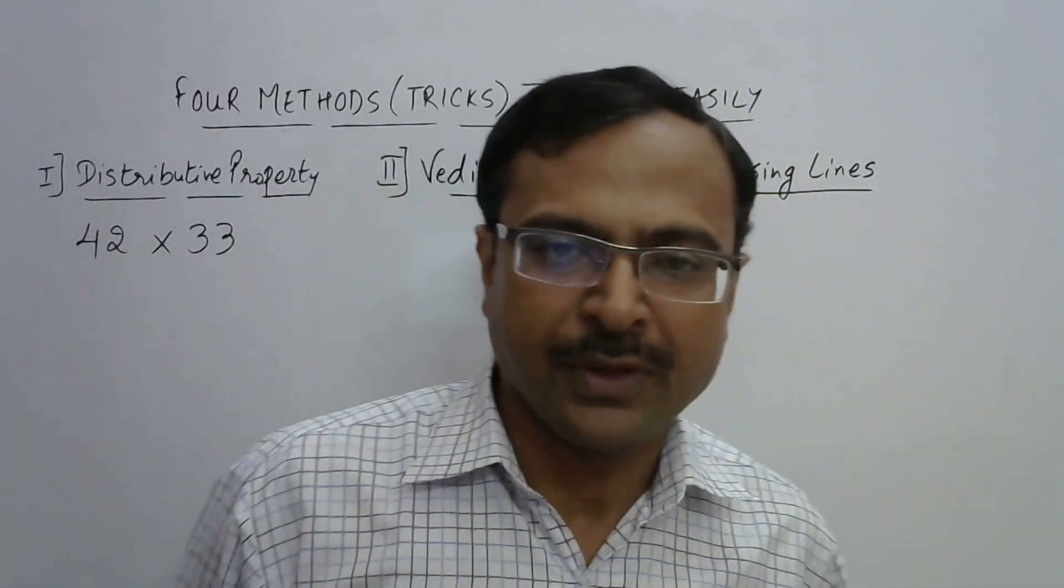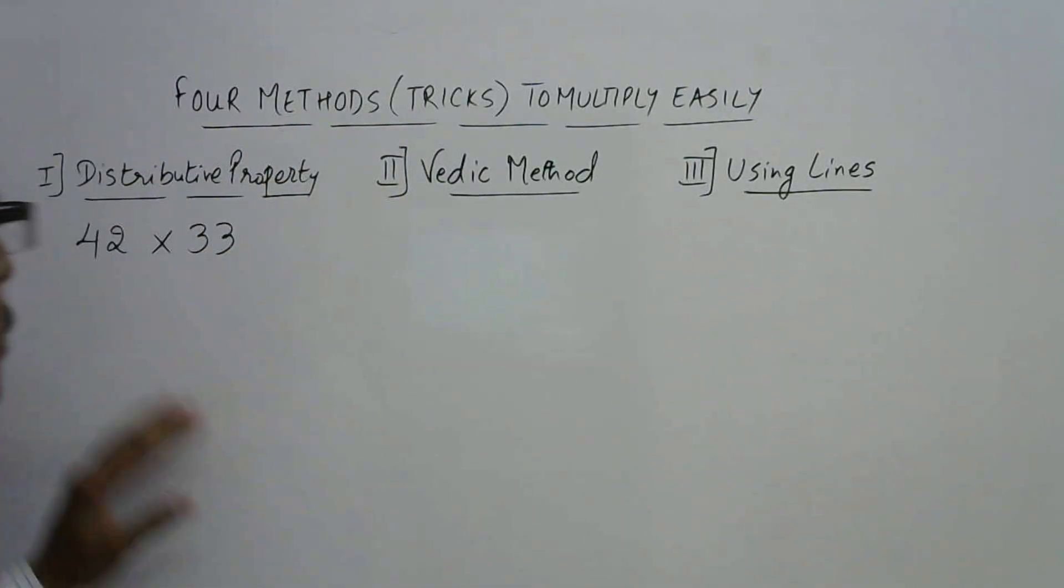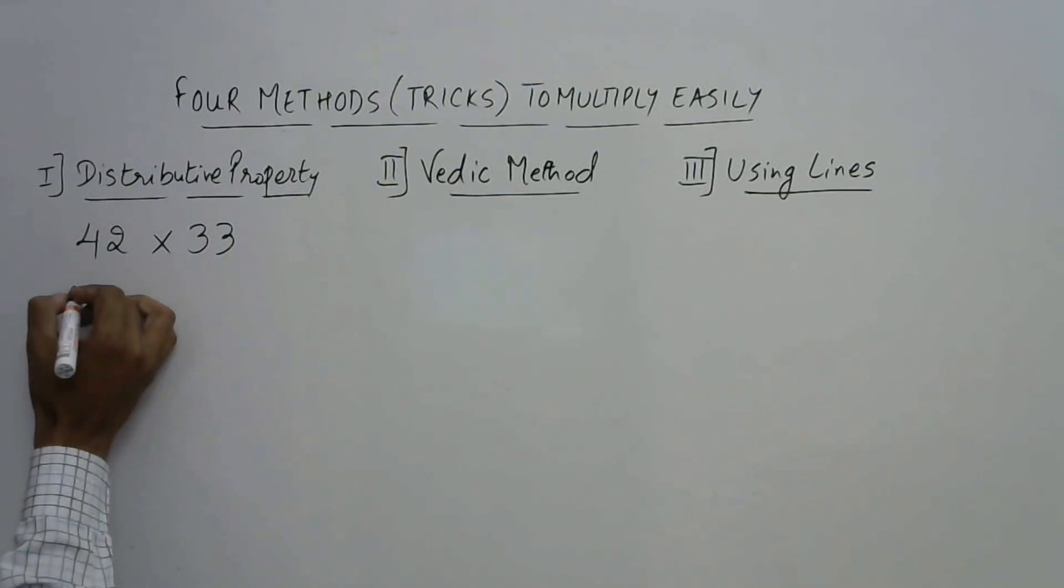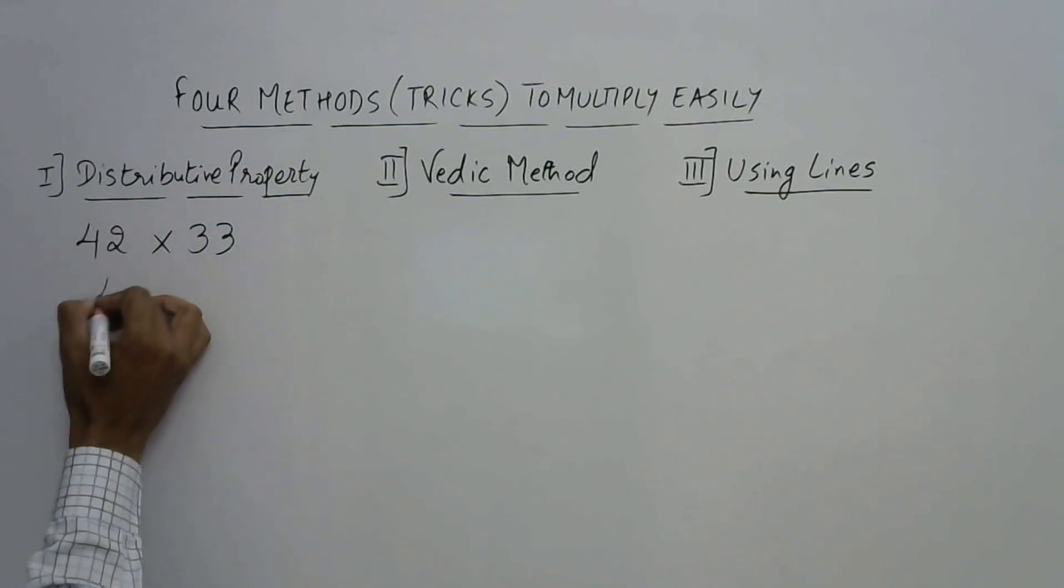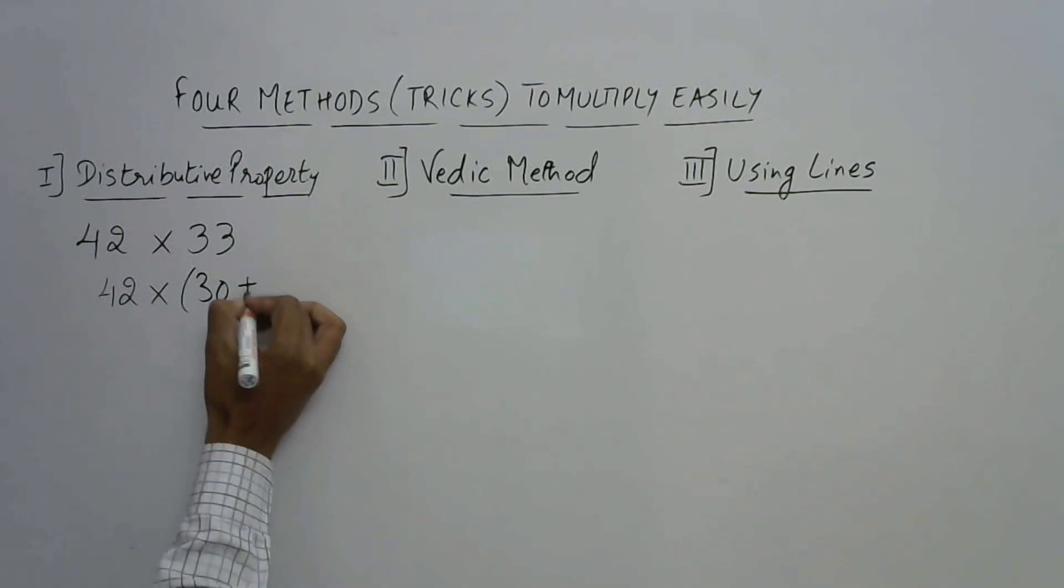So let's take one more example of this kind. So here we have the second example. I am again going to use all the 3 or 4 methods which I have told you. See 42 into 33. Now let's see how you can use the distributive property in getting to the answer. Now in the first part what I will do is I will retain this 42 and I will split this 33 into 2 parts that is it is very close to 30. So this becomes 30 plus 3.